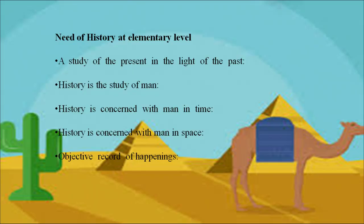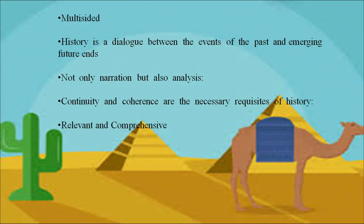A study of the present in the light of the past is an essential part of any growing discipline. History is the study of man — concerned with man in time and man in space. It is an objective record of happenings, a dialogue between the events of the past and emerging futures — not only narration but also analysis. Continuity and coherence are necessary requisites of history. History is relevant and comprehensive; thus we need to teach history at elementary level.